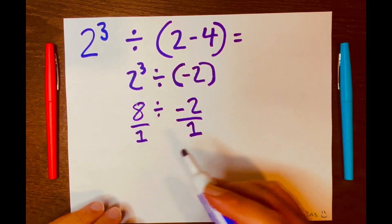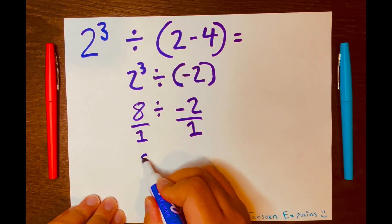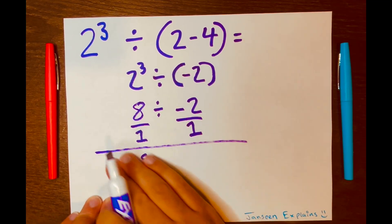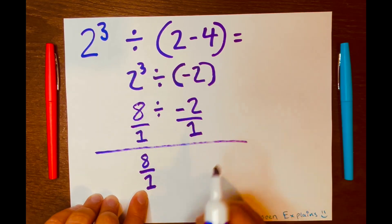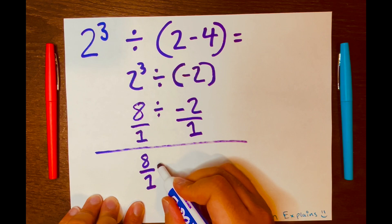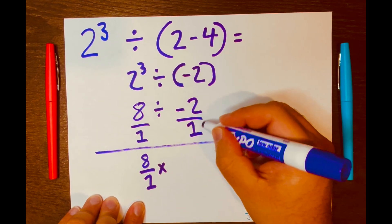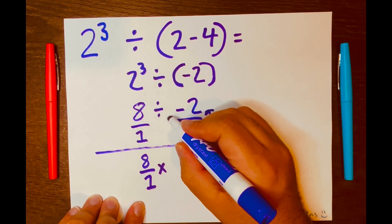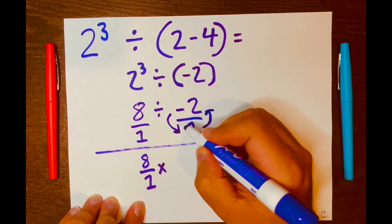And we can use the keep-change-flip method. So we'll keep 8 over 1. We'll just separate that so it doesn't mix up with the other numbers. And then you change the division symbol to multiplication. And then lastly, you'll flip this fraction.